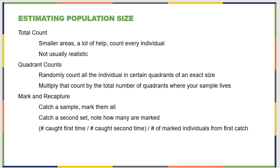When we estimate population size, there are a few different approaches. We can do a total count if you have a smaller area and individuals that don't move around a lot — it's easy to catch or catalog everybody — but that's not generally realistic. More commonly we use quadrant counts, where we randomly count all the individuals in certain quadrants of an exact size. We count a number of those quadrants and multiply by the total number of quadrants to get a good estimate of how many individuals exist in the total area.